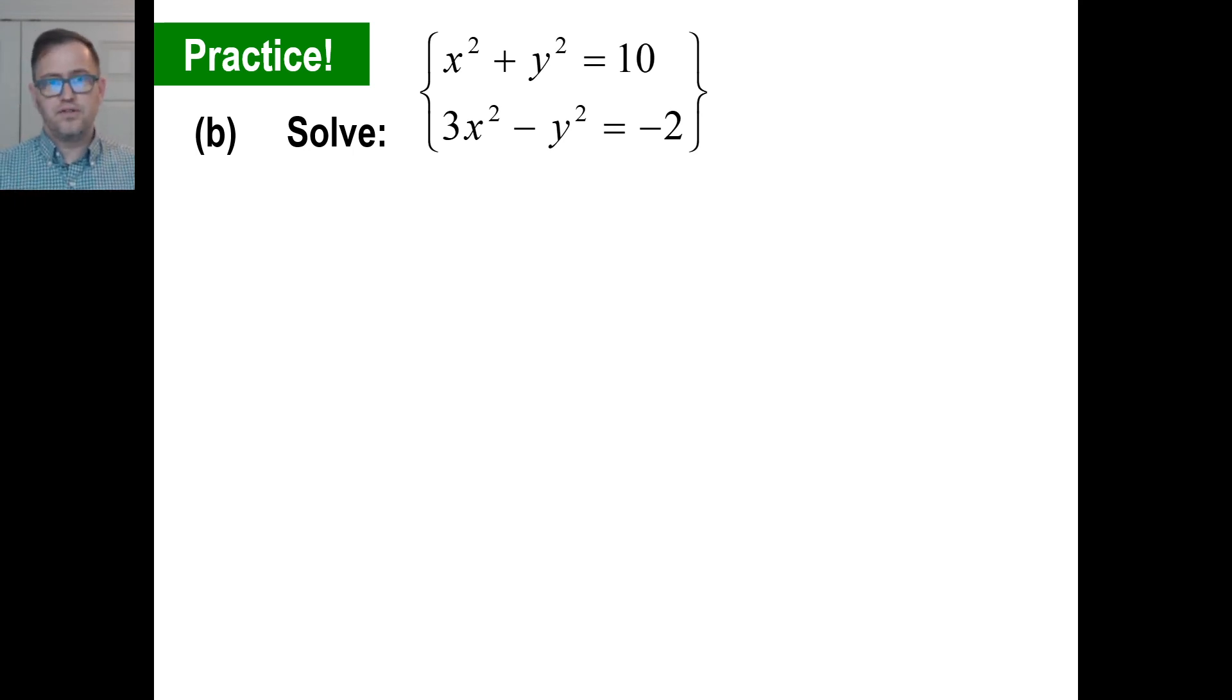And this is an easier one because we can just go ahead and add down and use elimination. And go ahead and pause it and try b. If we add down, this is what we get. We get 4x squared. That adds away. And this equals 8. We divide by 4. We get x squared is equal to 2. Well, then x is equal to plus or minus the square root of 2. And there is our two answers for x.